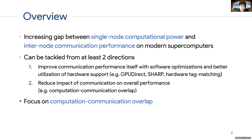As many of you probably know already, there's an increasing gap between the single node performance and the internode communication bandwidth on modern supercomputers, especially with the single node performance outpacing the internode communication performance. This can be tackled from at least two different directions. The first is where we can improve the communication performance itself with optimizations in software and better realization of hardware support, including things like GPUDirect, SHARP for collective communication, and hardware tag matching.